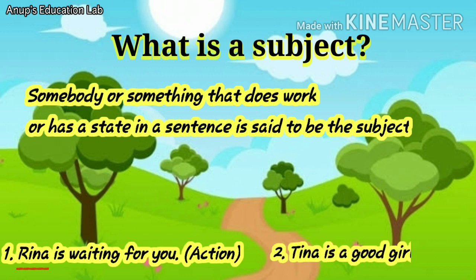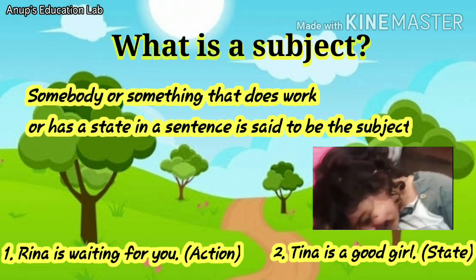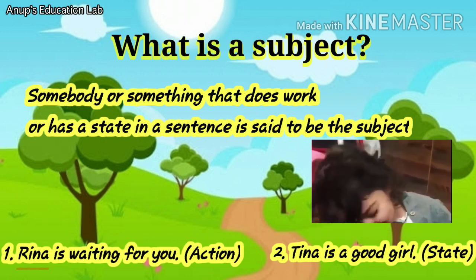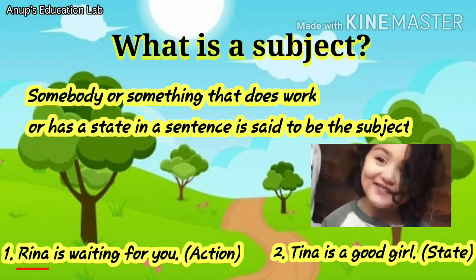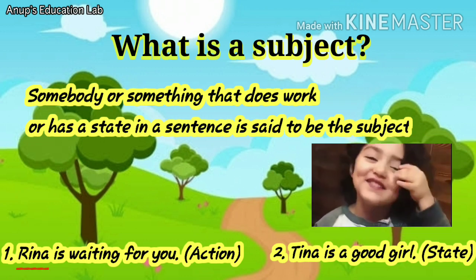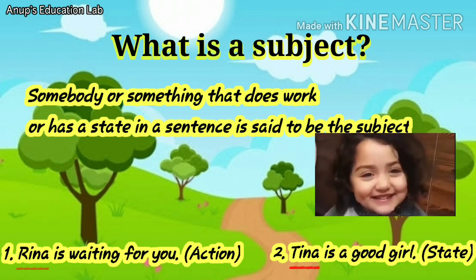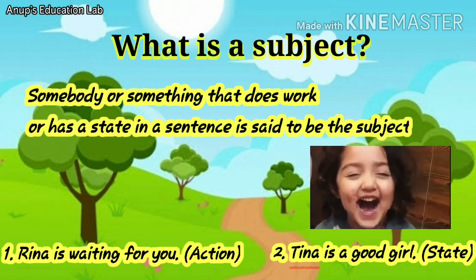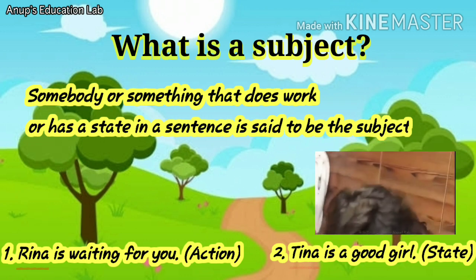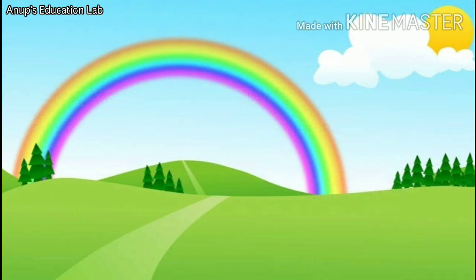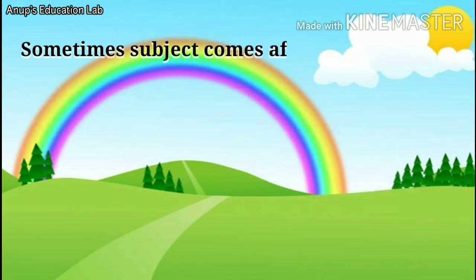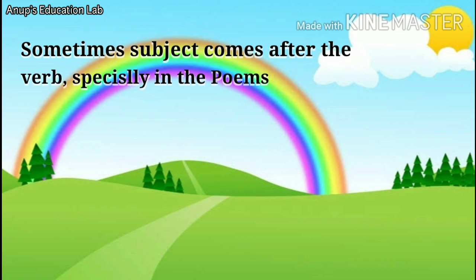Tina is a good girl. This sentence tells us what Tina is. She is a good girl. So, here, Tina becomes the subject because it tells us her state. Sometimes, subject comes after the verb, especially in the poems.